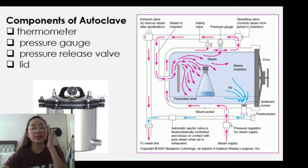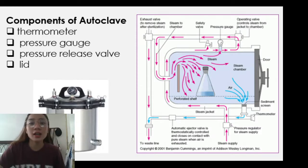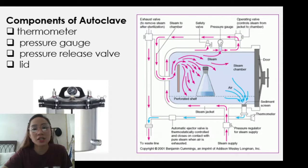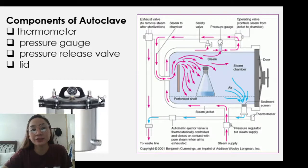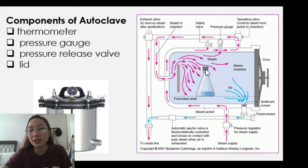These are the components of the autoclave. We have a thermometer, a pressure gauge, a pressure release valve, and a lid. The thermometer is usually located near the pressure gauge. As you can see, when the pressure is high, the pressure gauge reading goes up. The picture on the right is a horizontal type of autoclave — we have vertical types, which are simple, and horizontal types for larger volumes.